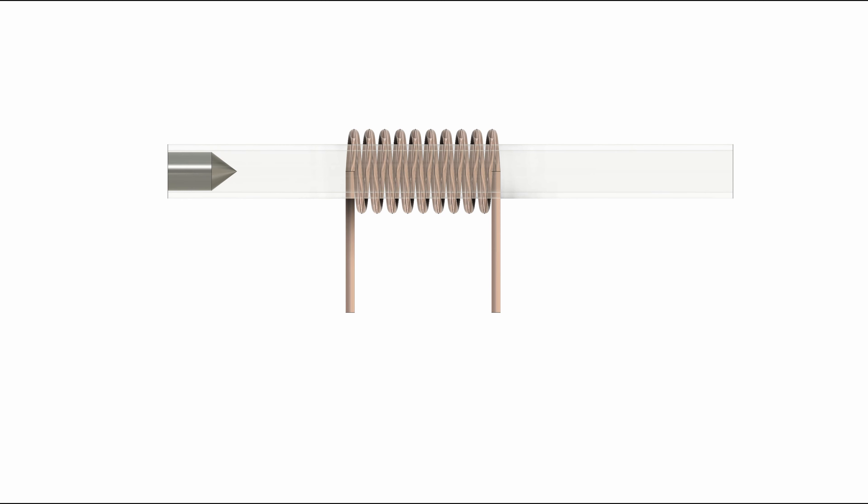In a coil gun, also known as a Gauss gun, one or more coils are used as an electromagnet to accelerate a ferromagnetic or conductive projectile. If the power is applied for too long, the projectile will decelerate and rest in the center.